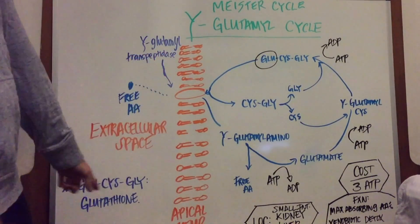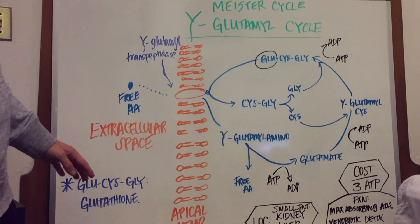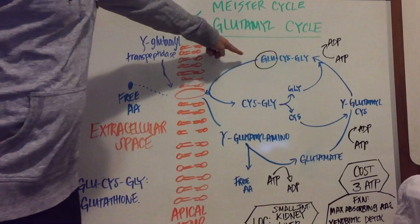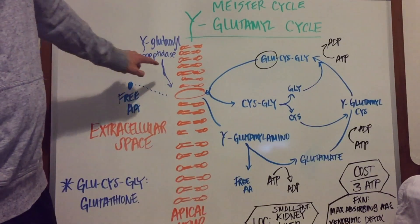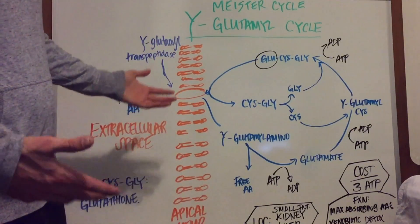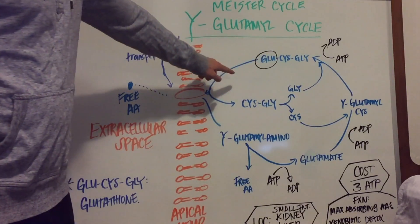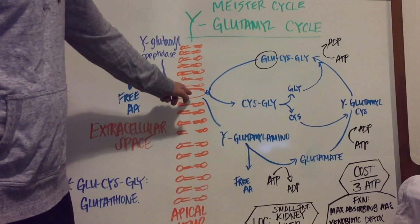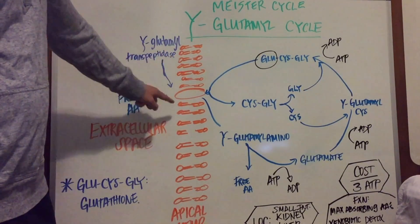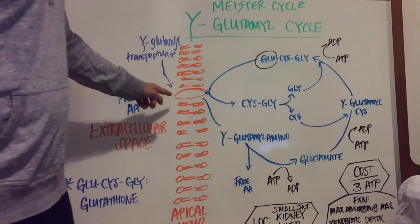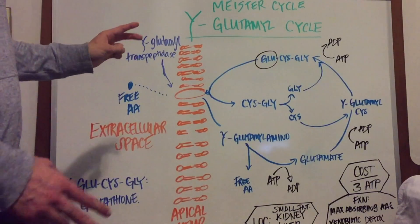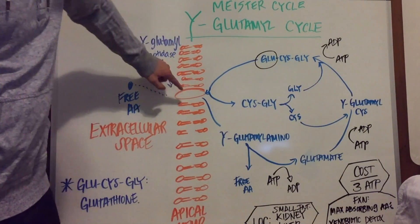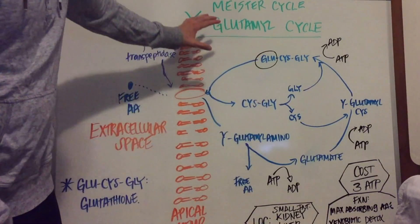I'll walk you through how this process works. We start with glutathione, which is broken down into three amino acids: glutamine, cysteine, and glycine. The glutathione molecule goes to the surface and interacts with the enzyme gamma-glutamyl transpeptidase, which is both a transporter and a transmembrane protein. It cleaves off the glutamate from the cysteine and glycine, leaving glutamate on the cellular side. The glutamate is then transported to the extracellular side while still attached to the enzyme, where it interacts with free amino acids in the extracellular space and binds together, forming a gamma-glutamyl amino acid complex on that side.